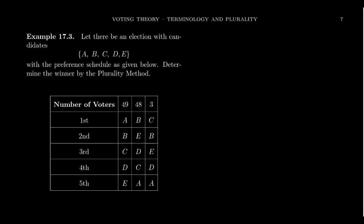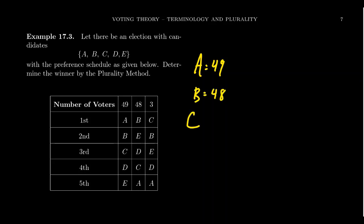Let's look at another example of an election. This time we're going to have five candidates — A, B, C, D, E — and there are only three voting profiles. 49 people voted alphabetically: A, B, C, D, E. 48 people had the profile B, E, D, C, then A. And three people put C, then B, then E, then D, then A. Working through these: candidate A had 49 first place votes, candidate B had 48, candidate C had 3, and candidates D and E never got any first place votes whatsoever.